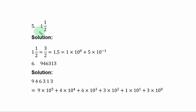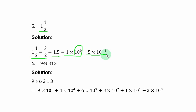Example 5: express 1 and one-half in expanded notation. It is a mixed fraction, so convert to an improper fraction: 3 over 2, which equals the decimal fraction 1.5. Here 1 is units and 5 is tenths. So the expanded notation is: 1 times 10 to the power 0, plus 5 times 10 to the power of minus 1.